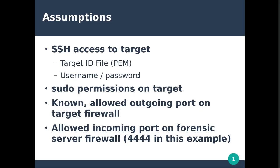Our first assumptions are SSH access to the target. With Amazon Web Services, especially with EC2, that usually means a target identity file, which you'll find as a .pem file. Whoever owns that instance should be able to give that to you, or you may be looking for PEM files on a suspect system. You also need the username — if you have the PEM file and the username, you should be able to authenticate unless they've also set a password. By default, you can do a lot of things using sudo in AWS with just the PEM and username, but it doesn't take much to add more security.